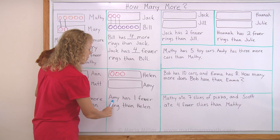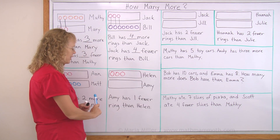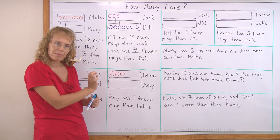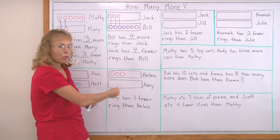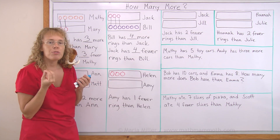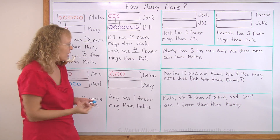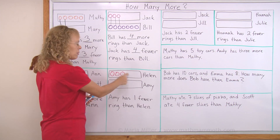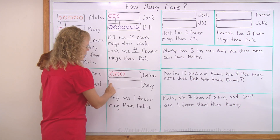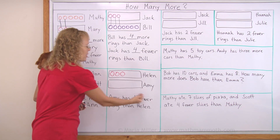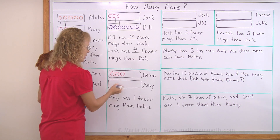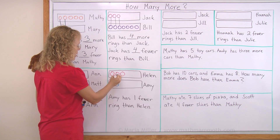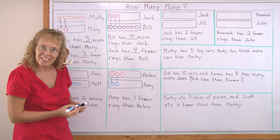Over here, Amy has one fewer ring than Helen. So who has more, Helen or Amy? Amy has one fewer ring — Amy has fewer rings or less rings, so Helen has more. I need to draw for Amy some, but not as many as for Helen. Amy has one less or one fewer ring than Helen, so I will draw two here. These two are matching like that, and now Amy has one fewer ring than Helen.